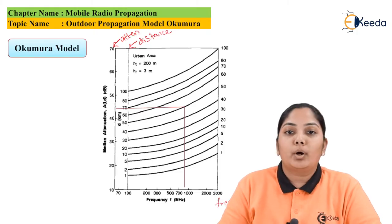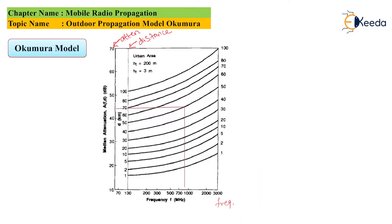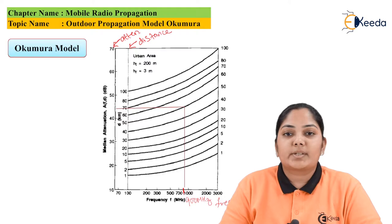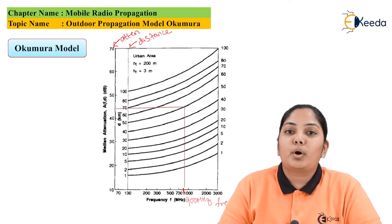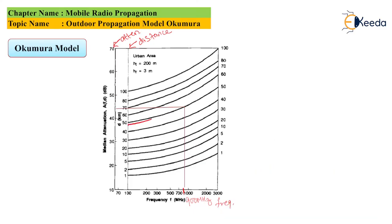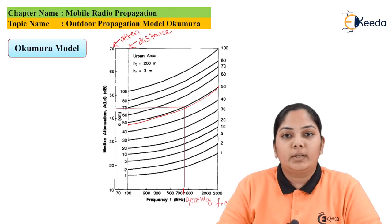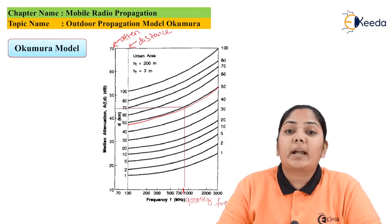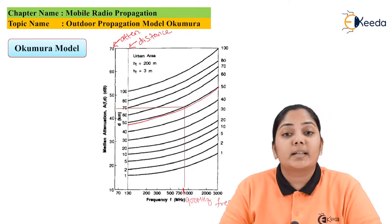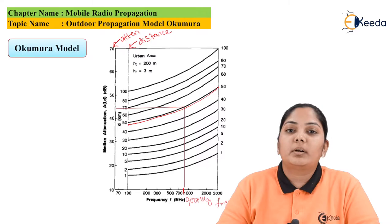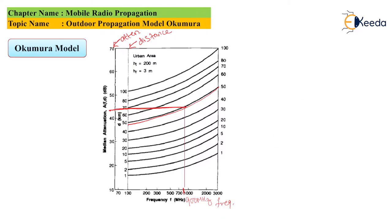I have plotted 900 MHz on the x-axis, on the 50 km curve — which represents a 50 km distance between the transmitter and the receiver. When we find the attenuation on this curve for 900 MHz, that is the GSM band, the attenuation comes out to 43 dB.